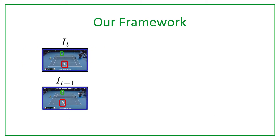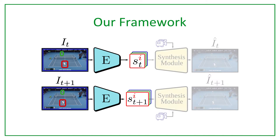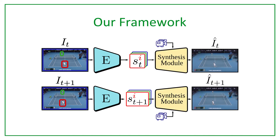Let's now take a look at the proposed framework. Our framework is trained on a dataset of calibrated monocular videos with bounding box annotations for each object. We propose a framework trained as a two-stage pipeline. The first stage of the pipeline consists of two modules. An encoder E extracts an environment state for each object in the scene. Successively, a synthesis module reconstructs an image from the encoded state conditioned on a camera pose.